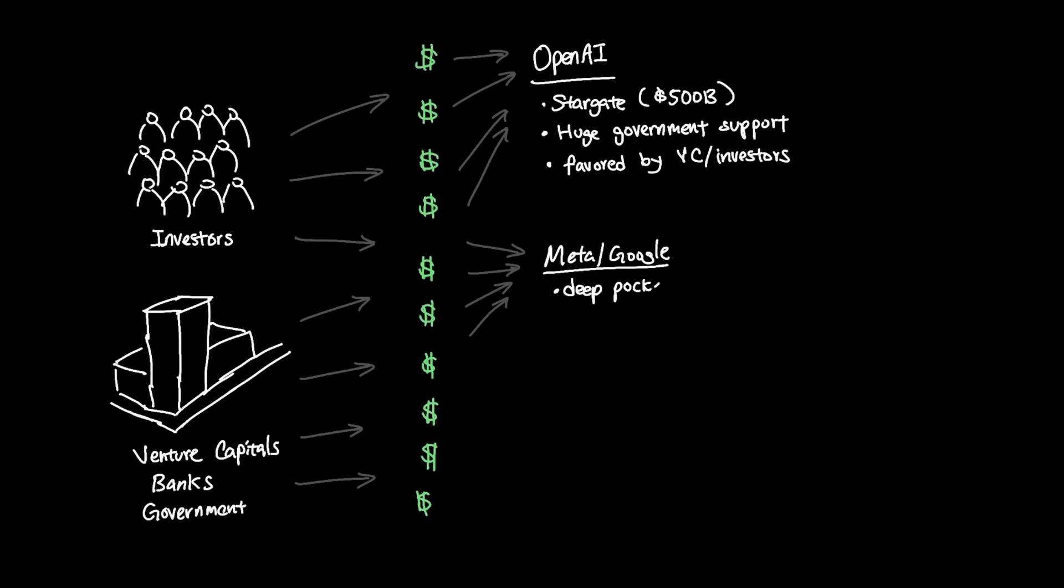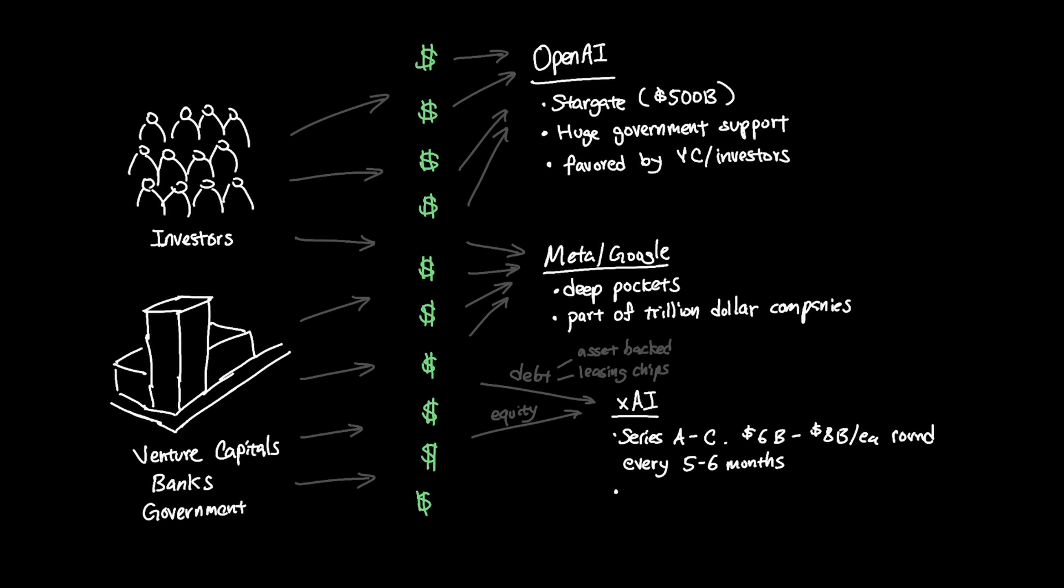Meta and Google also have deep pockets by the sheer fact that they are part of a company valued at trillions of dollars in market cap. In comparison, xAI is raising capital left and right through the mix of debt and equity. Their debt structure is either backed by assets or leasing their chips at cost. xAI has gone through Series A, B, and C, each round bringing in figures of six to eight billion dollars basically every five to six months. And the company is now considered to be valued at more than $200 billion.